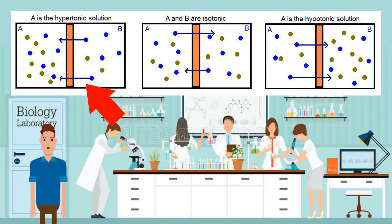Hypertonic: more solute concentration or low water potential. Isotonic: equal solute concentration. Hypotonic: less solute concentration or high water potential.